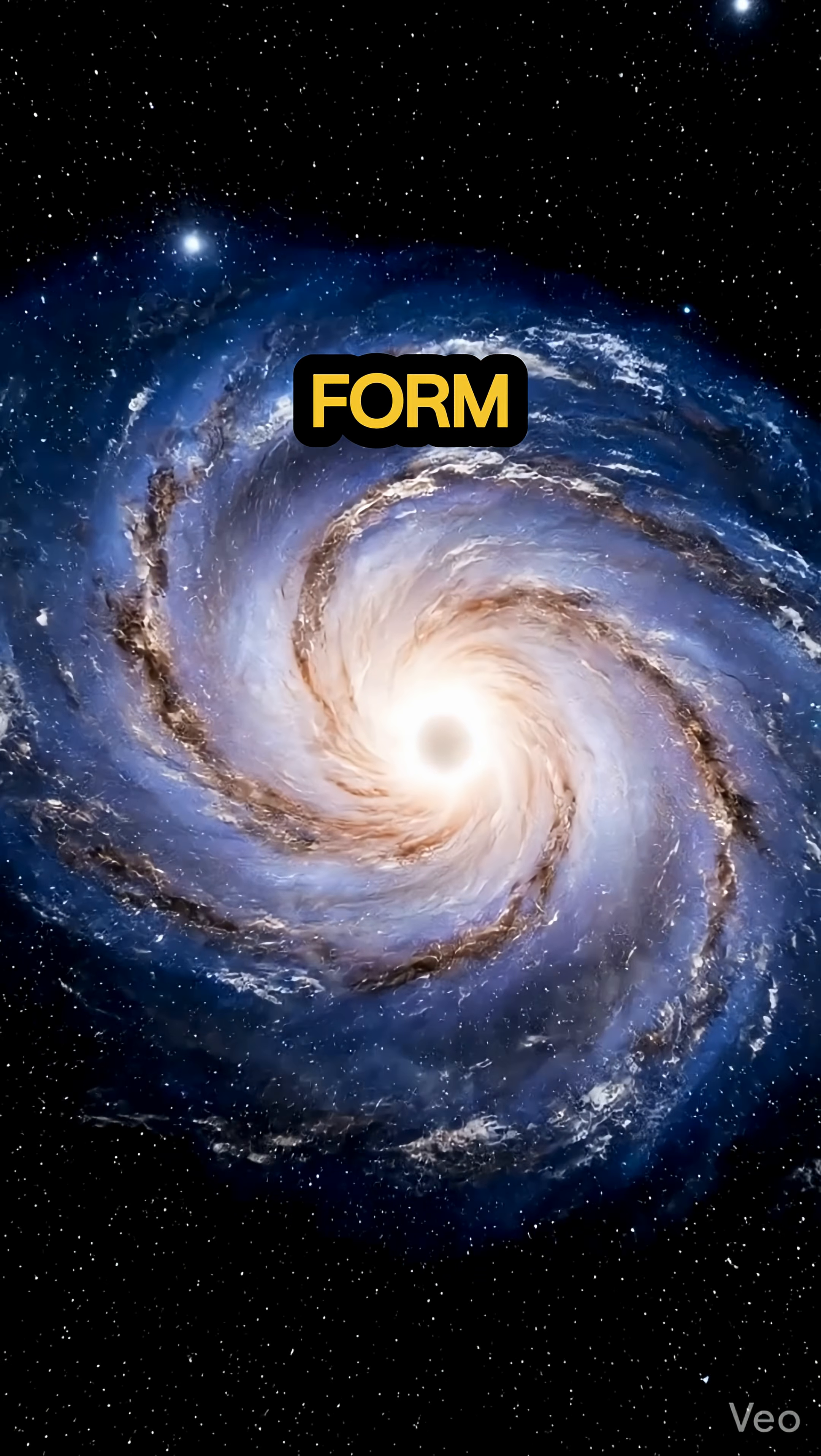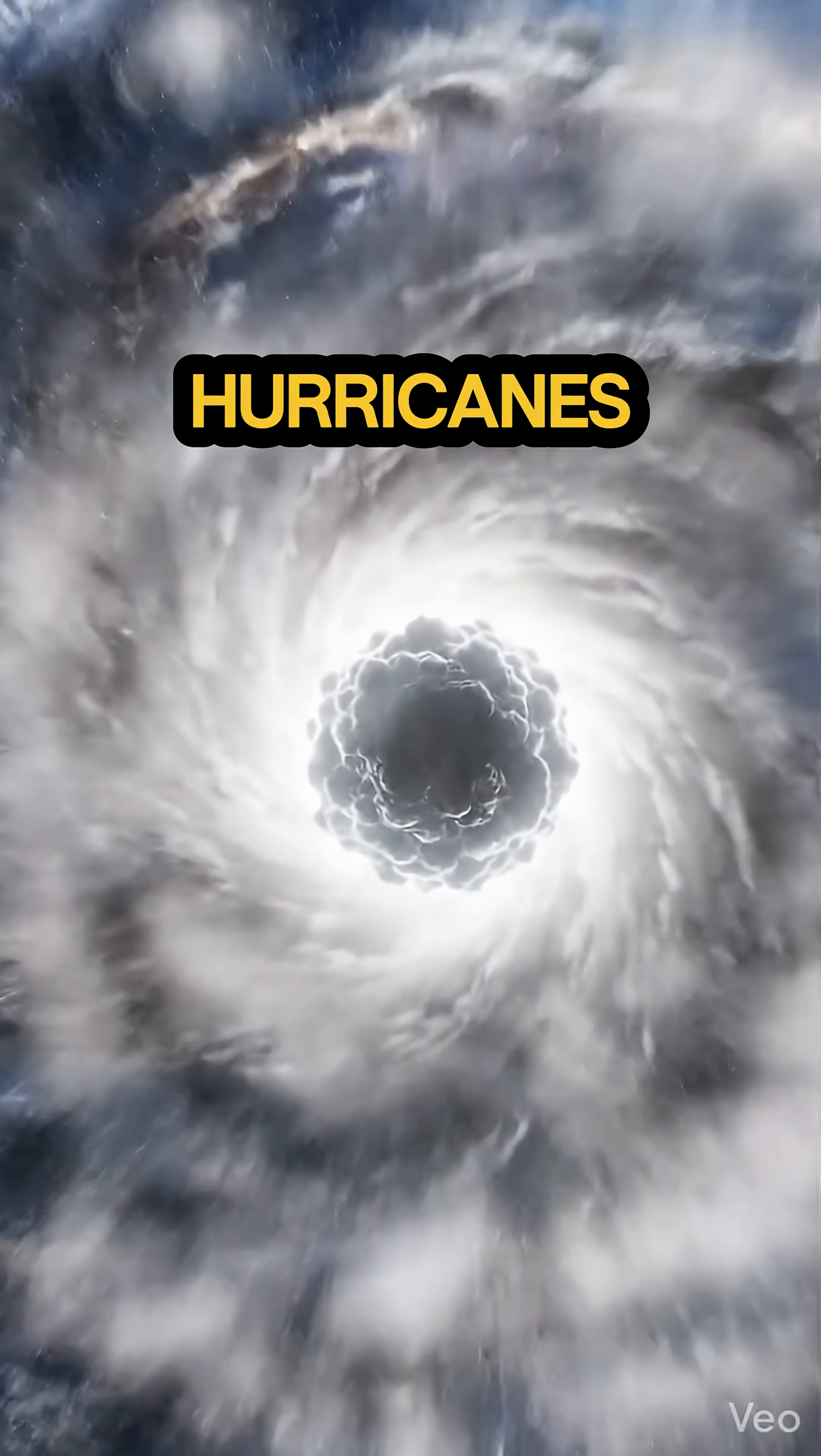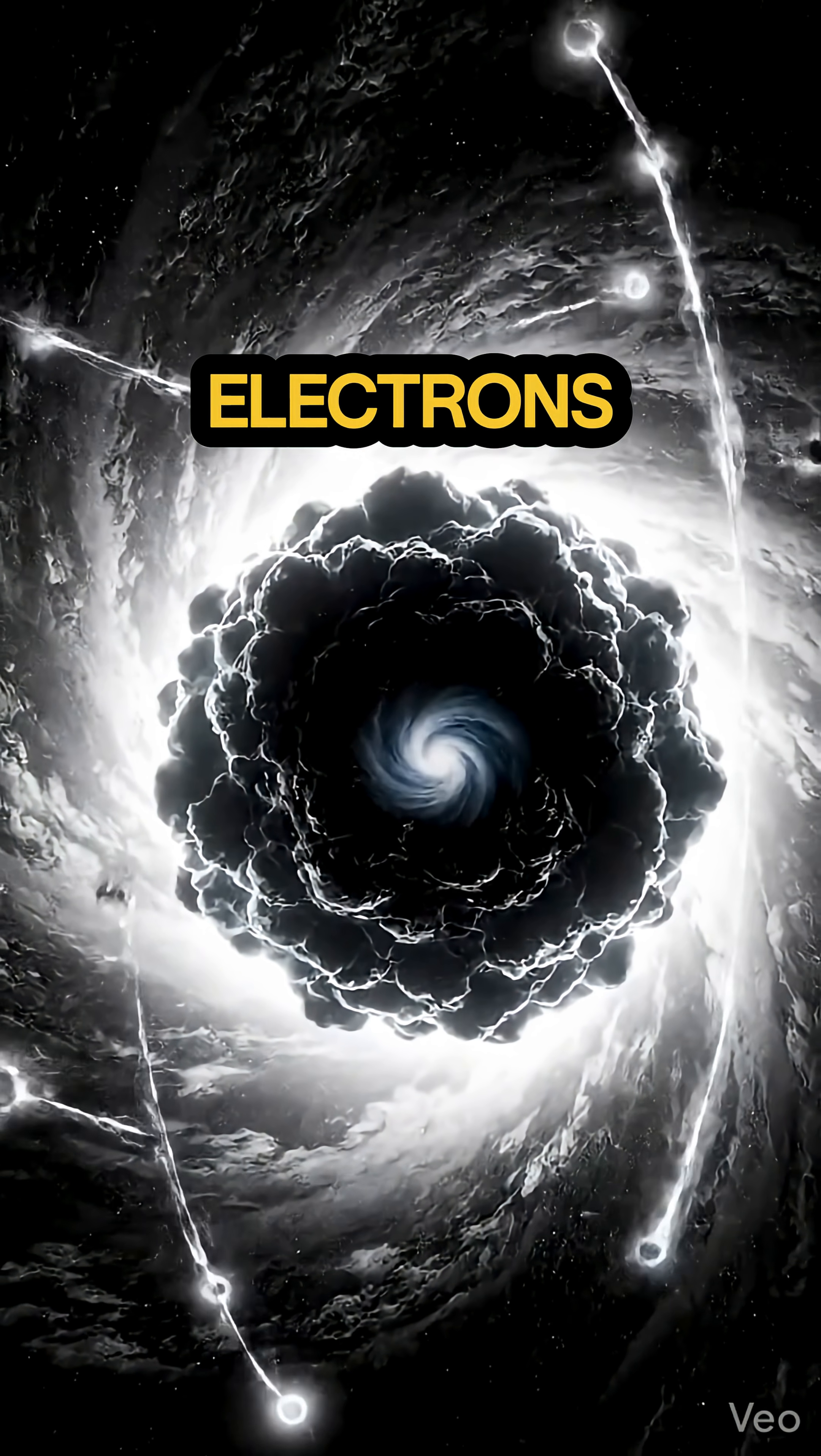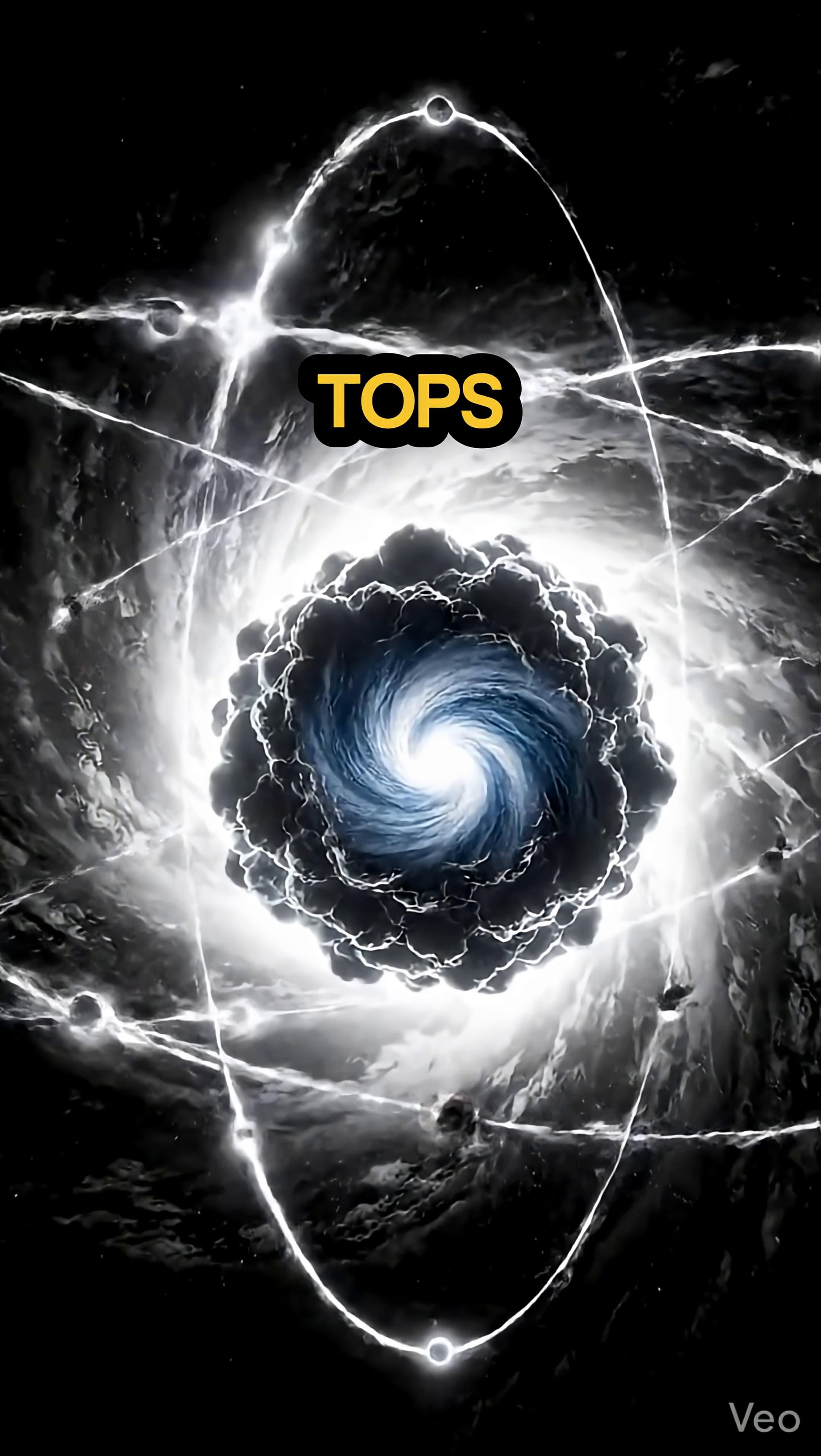That's why galaxies form graceful spirals, hurricanes twist with terrifying precision, and even electrons behave like miniature spinning tops.